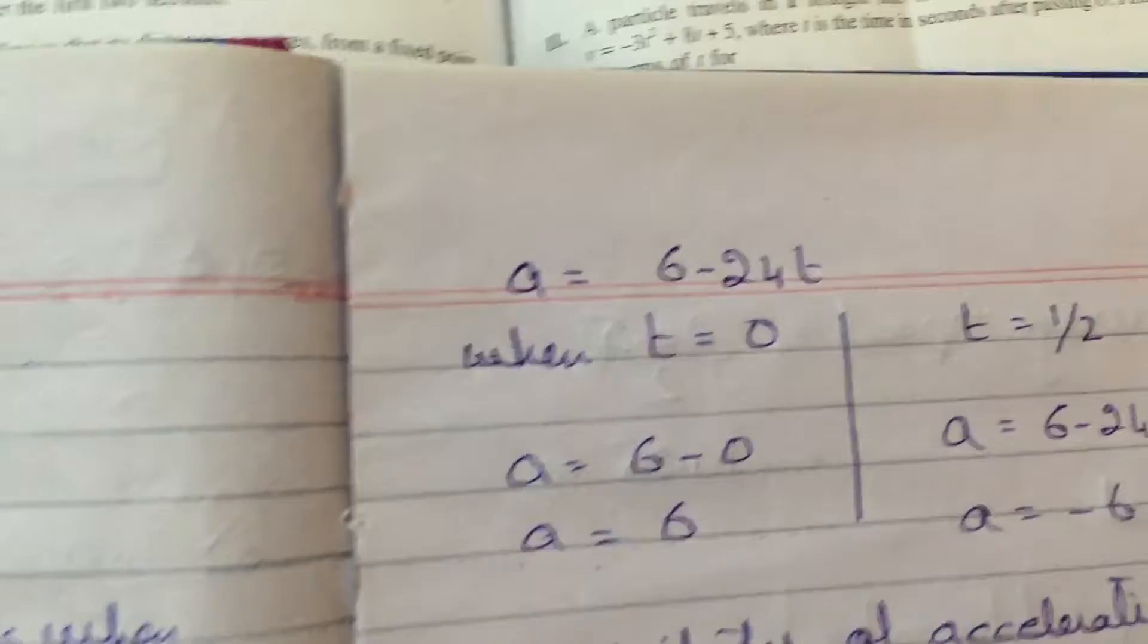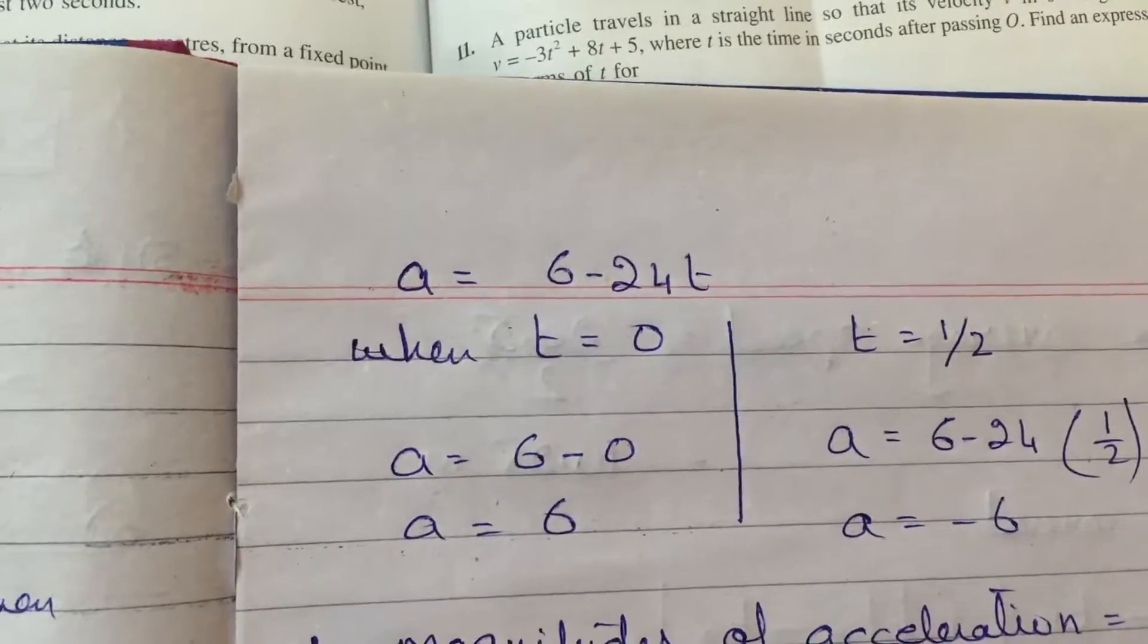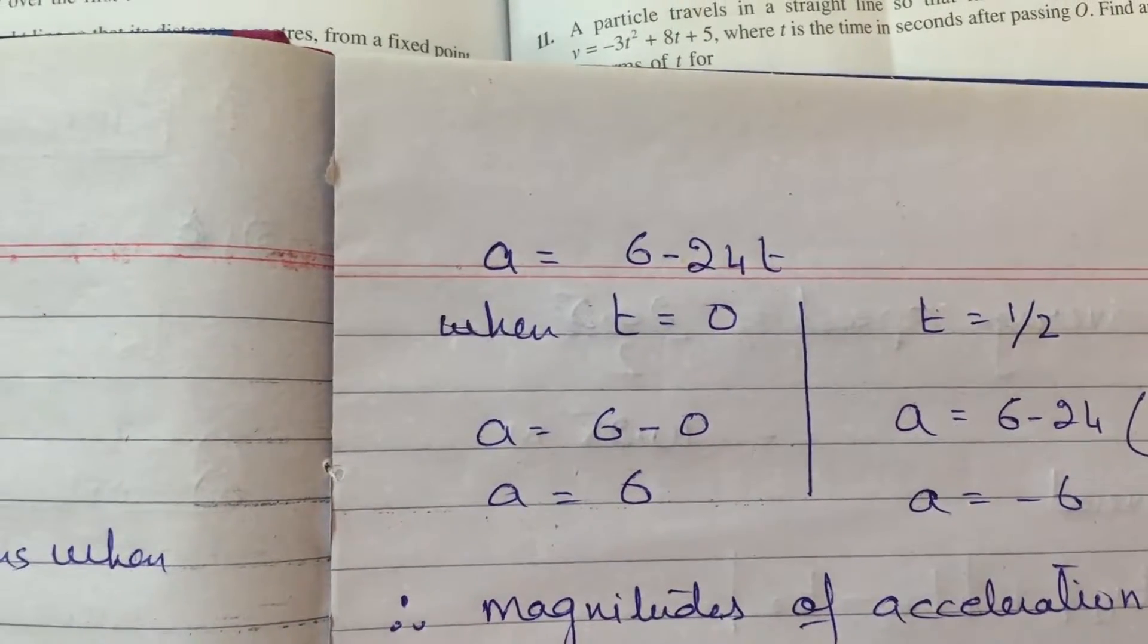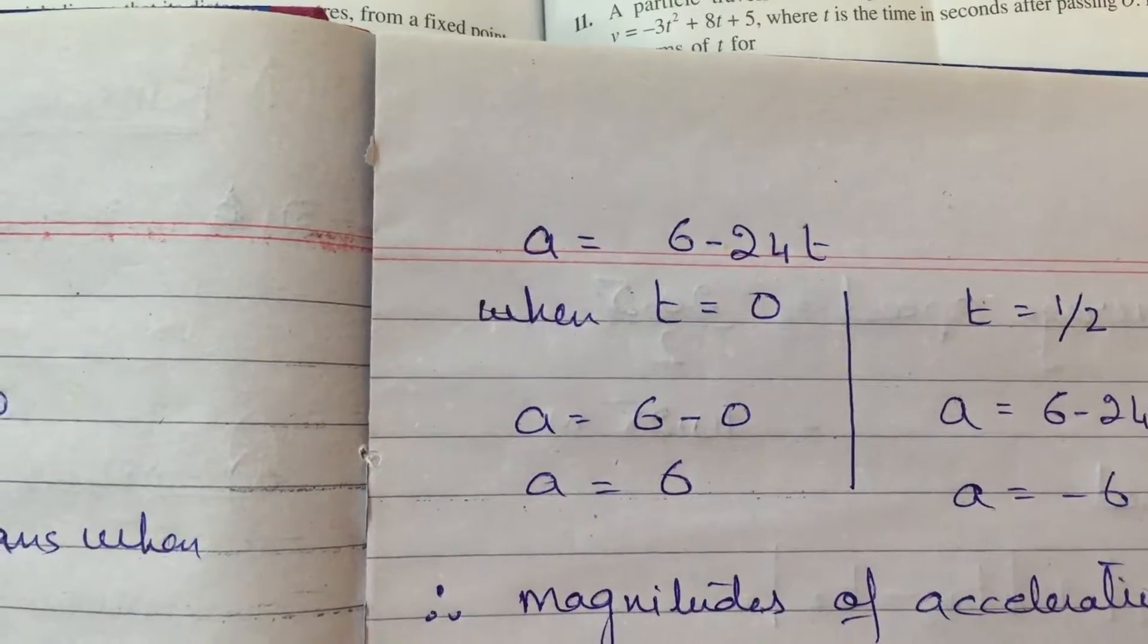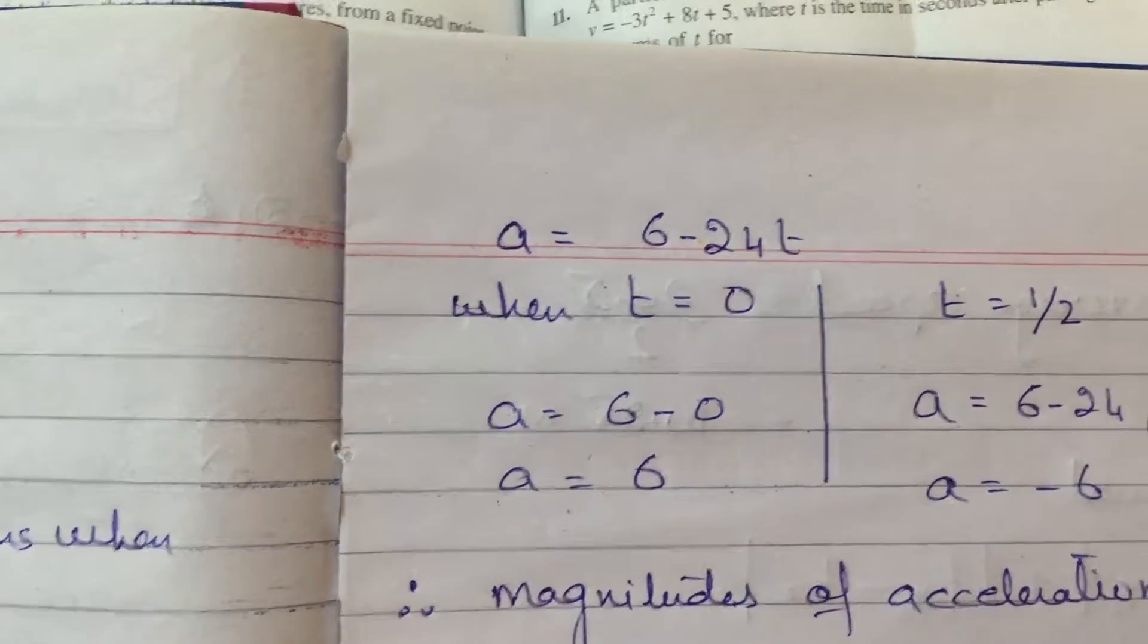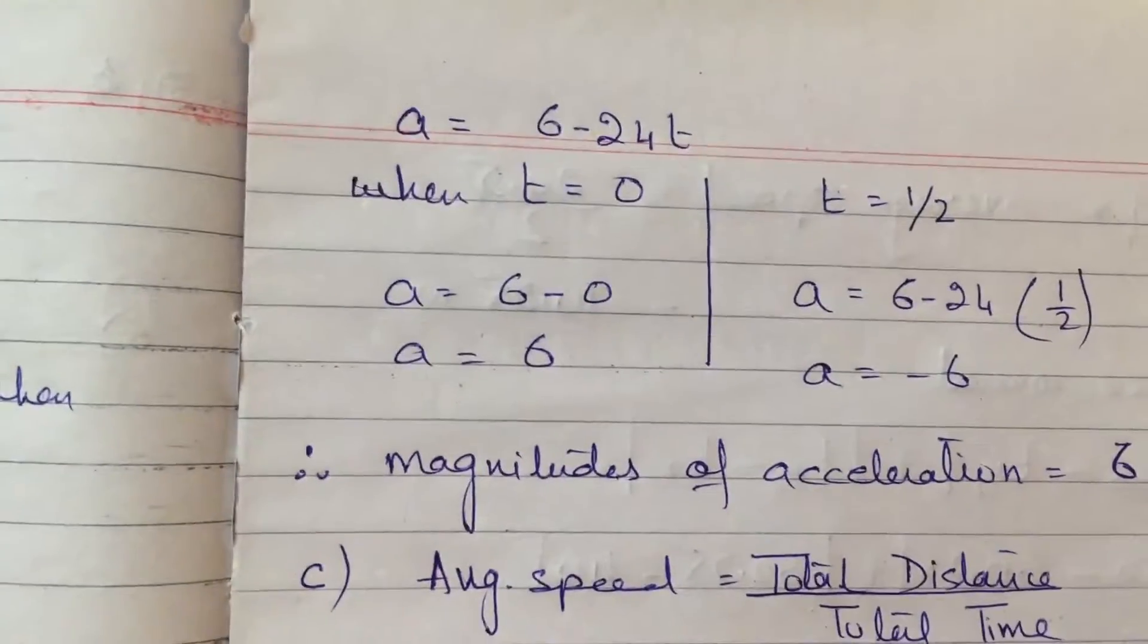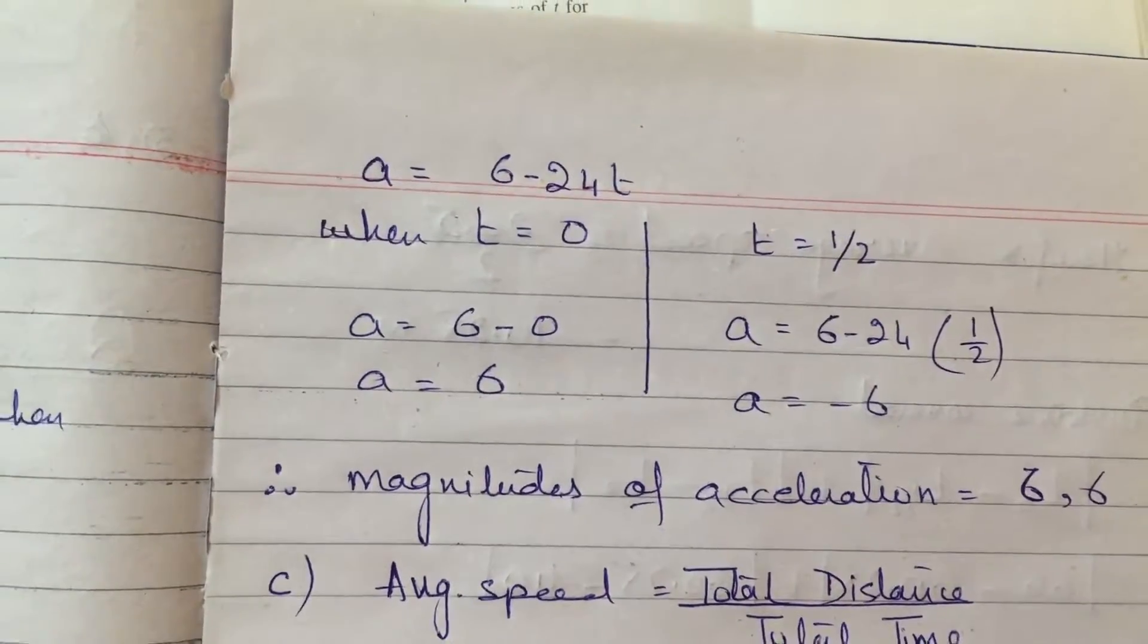These timings I substituted in the acceleration equation and then I got a equals 6 and a equals minus 6. I didn't have the acceleration equation, so by differentiating the velocity equation once again I got the acceleration equation. So I got magnitude 6 and 6 because the question was asking for magnitude of acceleration.